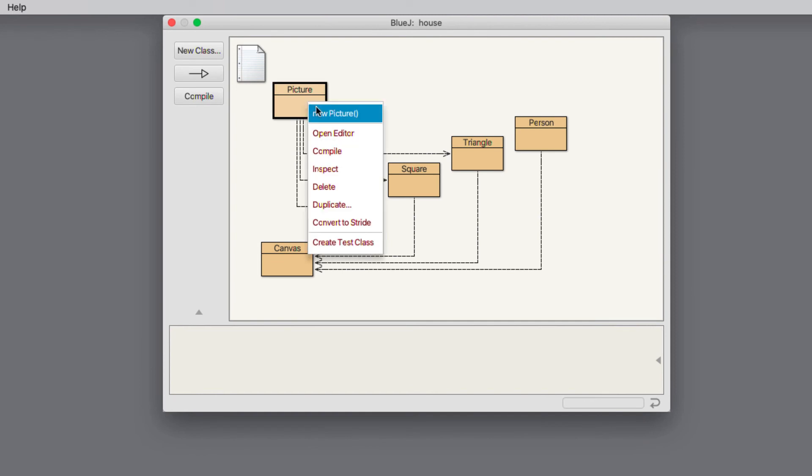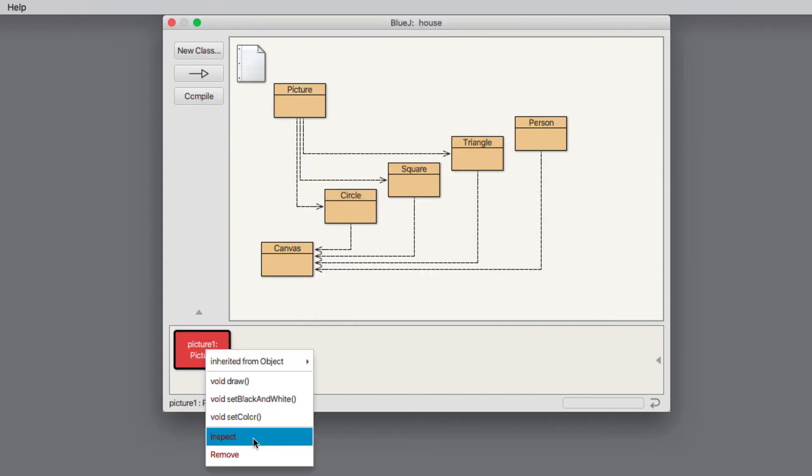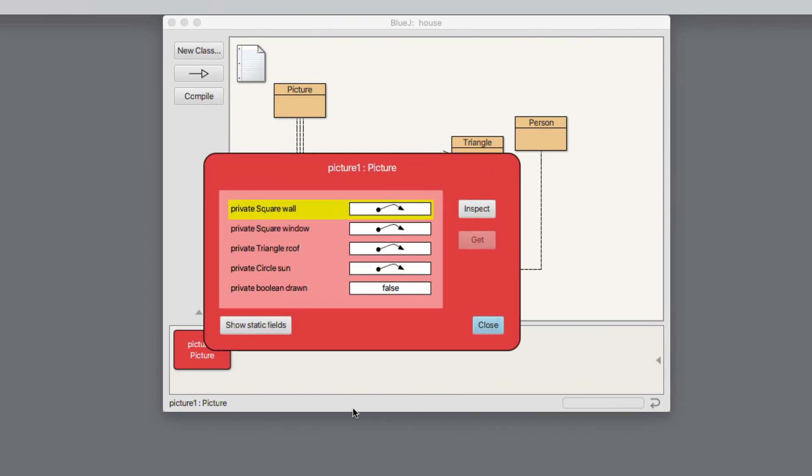Let's create a picture object and bring up its inspector. And so here we see something rather different from what we saw with the triangle and the circle.